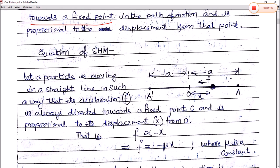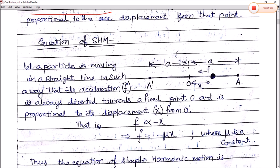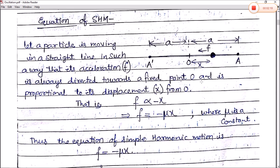Now let's see a mathematical derivation — the equation of simple harmonic motion. Let a particle move in a straight line such that its acceleration f is always directed towards a fixed point O. The particle has maximum displacement in the positive x direction (A) and in the negative x direction (A dash). The body is here and the displacement is x. According to the definition of SHM, f is proportional to minus x, because the acceleration is in the opposite direction to displacement.